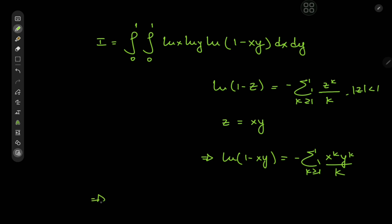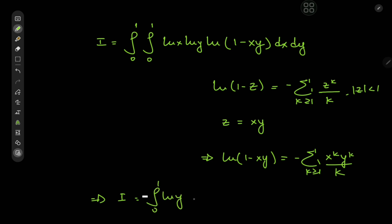This implies that the target integral I is now the double integral from 0 to 1 of log x — wait, we have log y here and we're integrating first with respect to x, so we might as well take the log y term outside the integration with respect to x. And now we have the integral from 0 to 1 of log x times the sum.